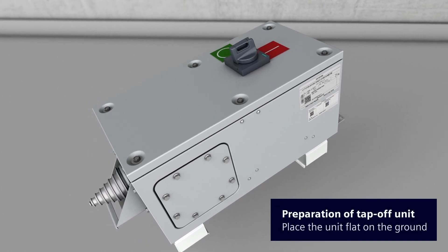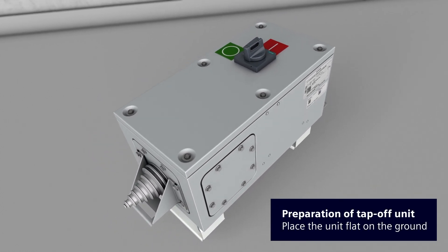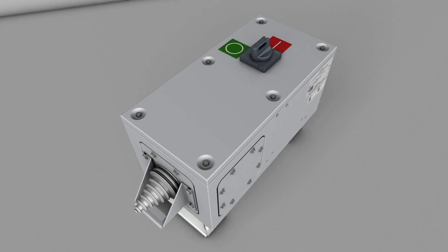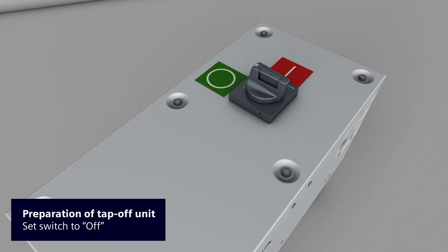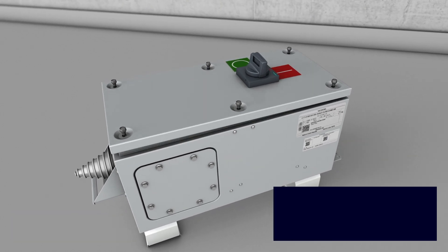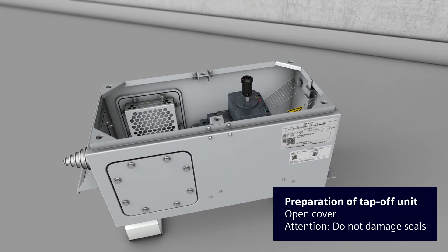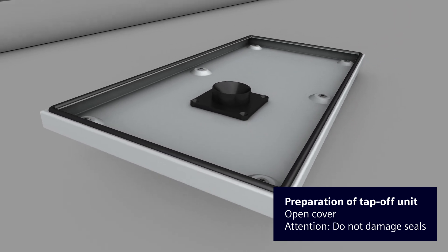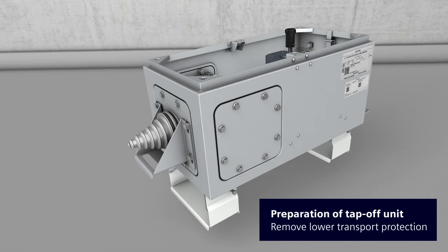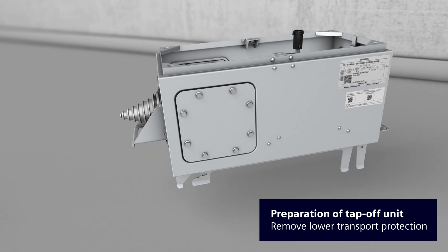Prepare the tap-off unit for installation. Place the tap-off unit flat on the ground. Set the switch position of the door-mounted rotary operator to OFF before removing the cover. Detach the cover screws and lift off the cover. Make sure not to damage the seals arranged on the inside of the cover. You can now remove the lower transport protection.